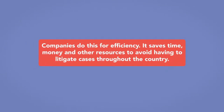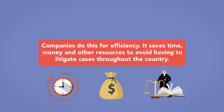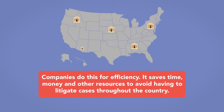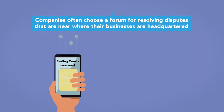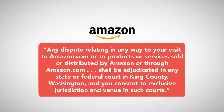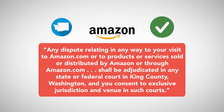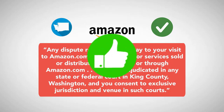Companies do this for efficiency — it saves time, money, and other resources to avoid having to litigate cases throughout the country. Companies often choose a forum near where their businesses are headquartered. For example, Amazon's forum selection clause specifies that any dispute relating in any way to your visit to Amazon.com or to products or services sold or distributed by Amazon shall be adjudicated in any state or federal court in King County, Washington, and you consent to exclusive jurisdiction and venue in such courts. Forum selection clauses are ordinarily valid and enforceable.